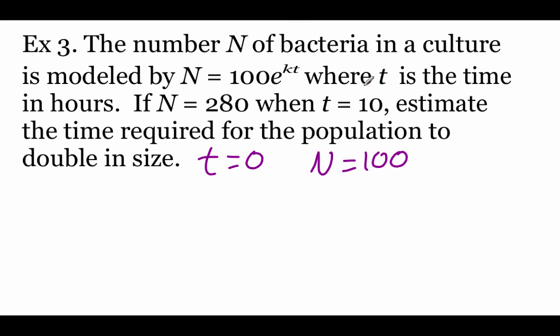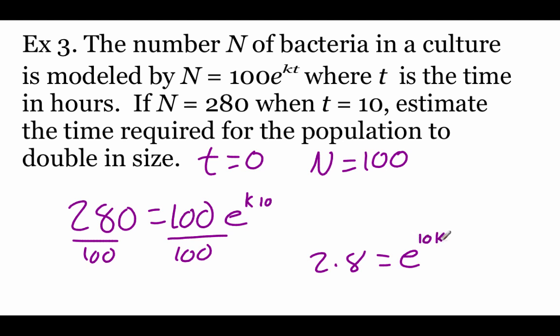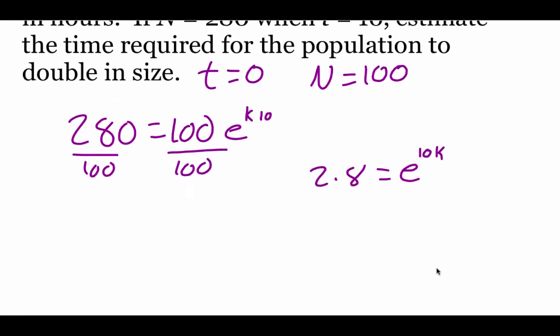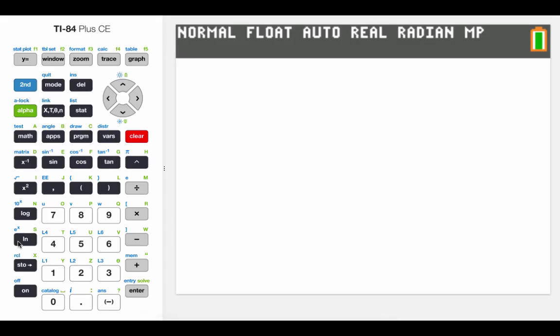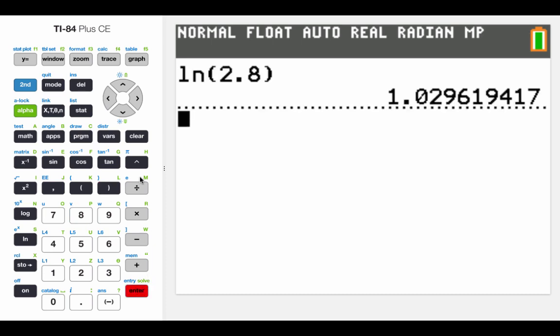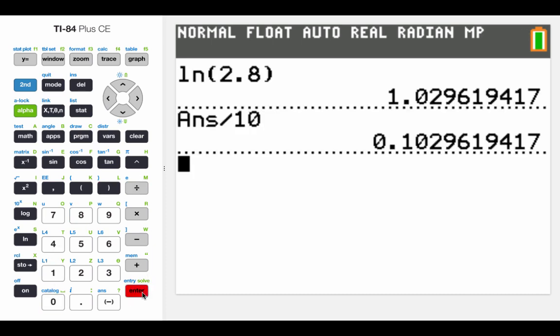So I'm going to use that n value of 280 and that t value of 10 and plug those in. So we've got 280 equals 100 e to the power of k times 10. And what we're going to do is solve for this k value. So I'm going to divide both sides by 100. So we get 2.8 equals e to the 10k power. In order to solve this one, I think I will rewrite it in logarithmic form. So natural log of 2.8 equals 10k. I'll divide both sides by 10 and then type this stuff into my calculator. I'm going to do the natural log of 2.8 first, hit enter, and then I'll divide that answer by the 10. So we get 0.103 if we round it to three decimals.